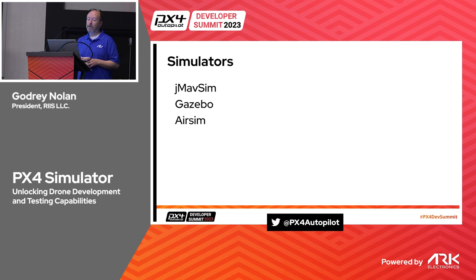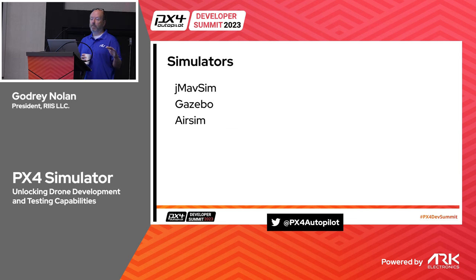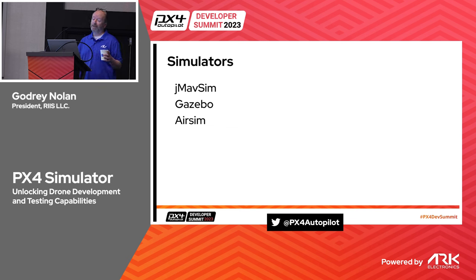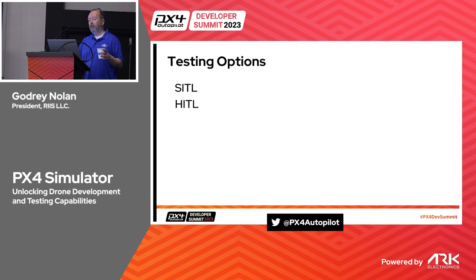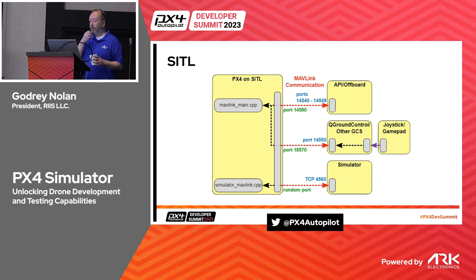I'm going to focus on jmavsim, Gazebo, and AirSim. What we're really trying to do is use jmavsim and PX4 as the basis for what we're trying to test on our mobile app - in this case Android, but it could be iOS. There are two types: software in the loop and hardware in the loop. If you look at the documentation, it's like this: we have PX4 on SITL, so PX4 is running on our computer, and then we have a simulator which is jmavsim or Gazebo.